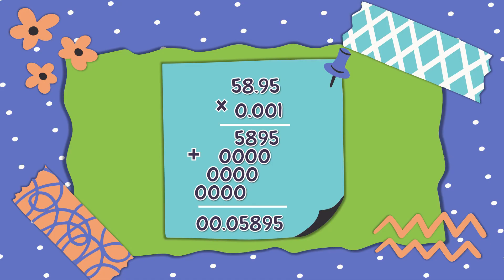Again, let's count all the numbers to the right of the decimal point: 1, 2, 3, 4, 5 — and 1, 2, 3, 4, 5. So the answer is 0.05895, which is 5,895 hundred-thousandths.